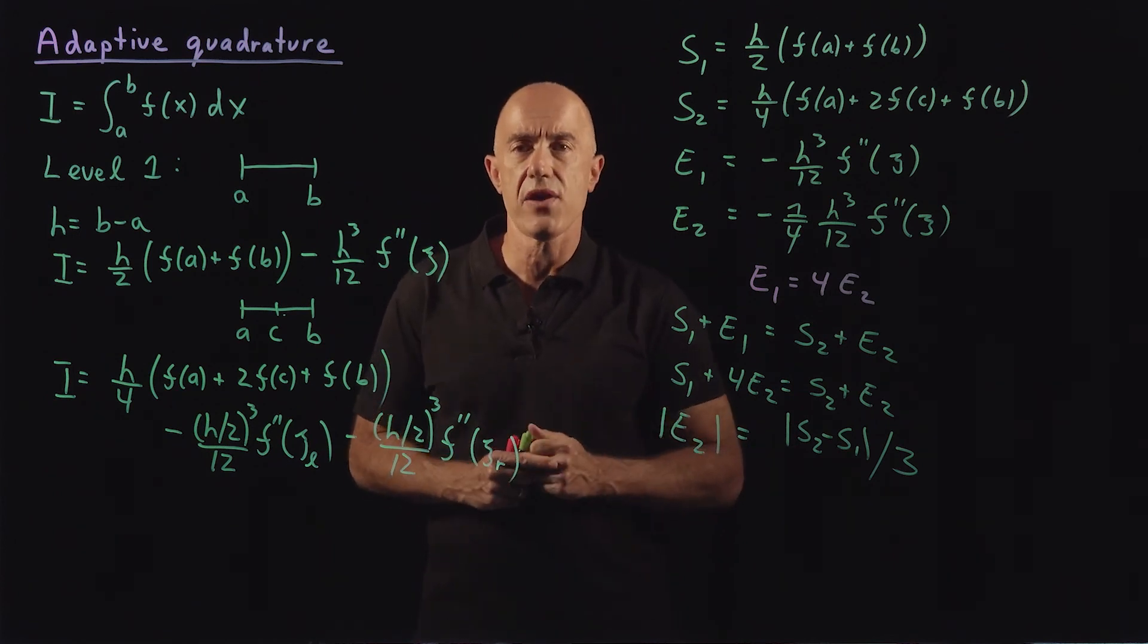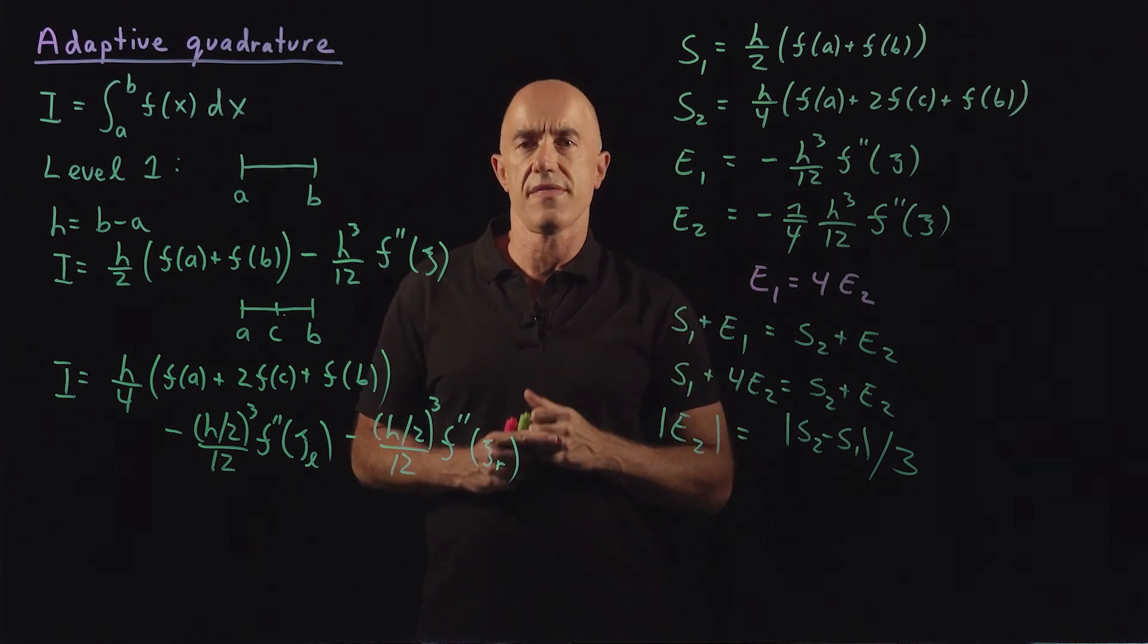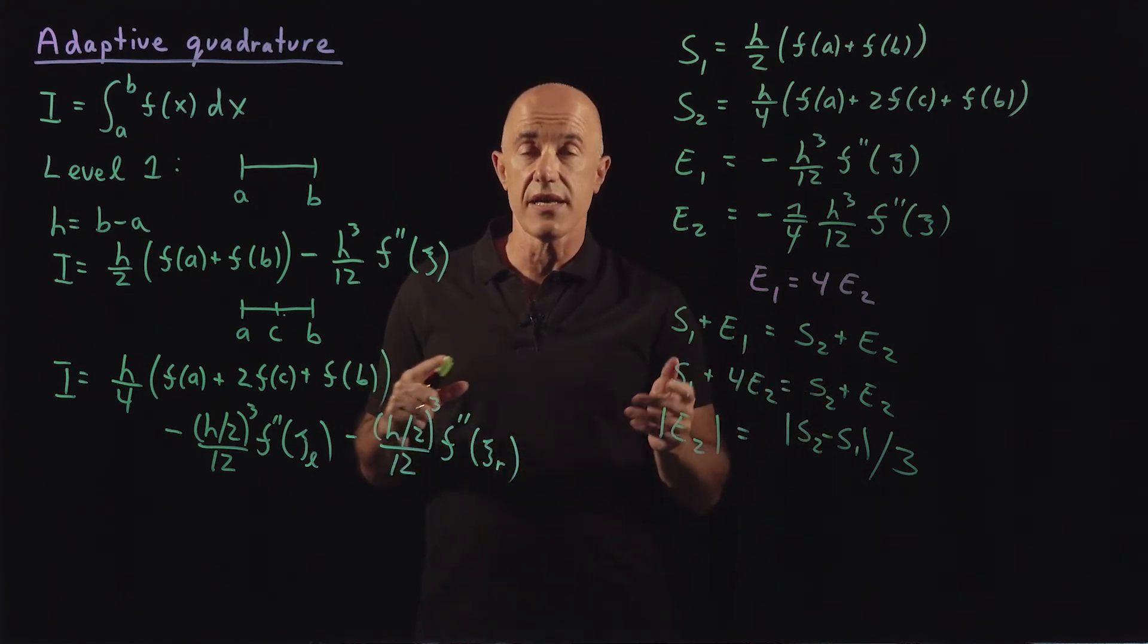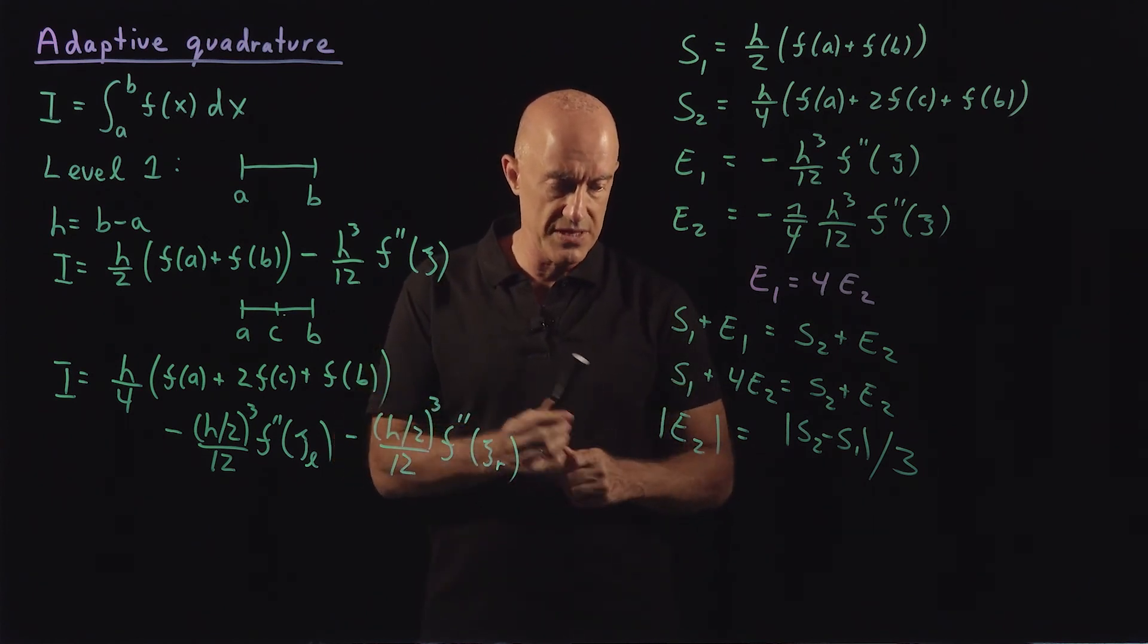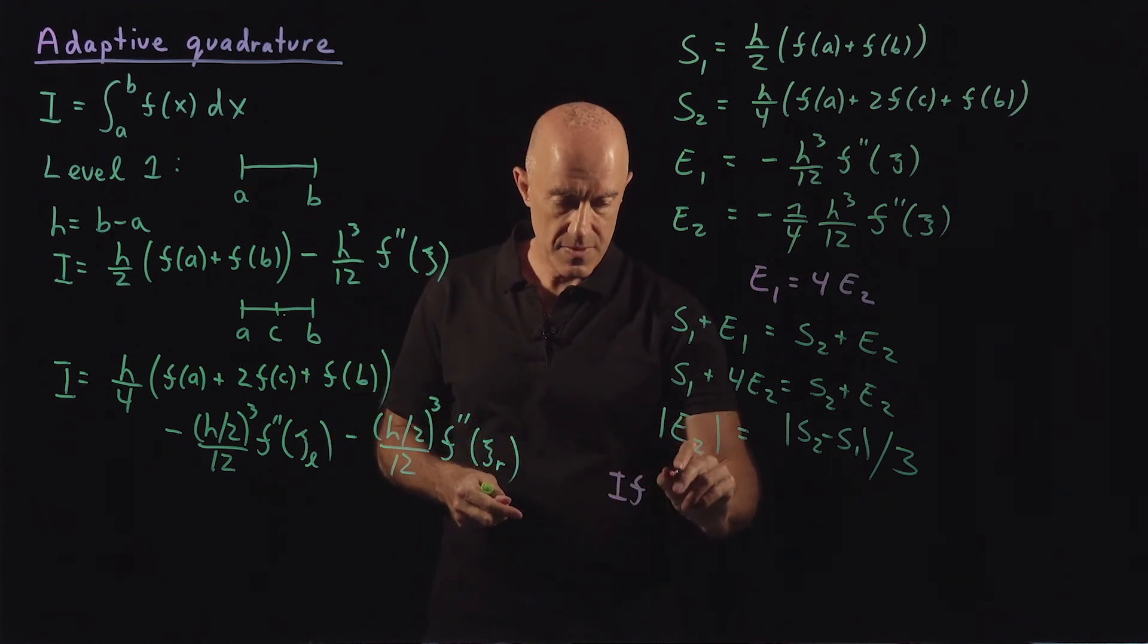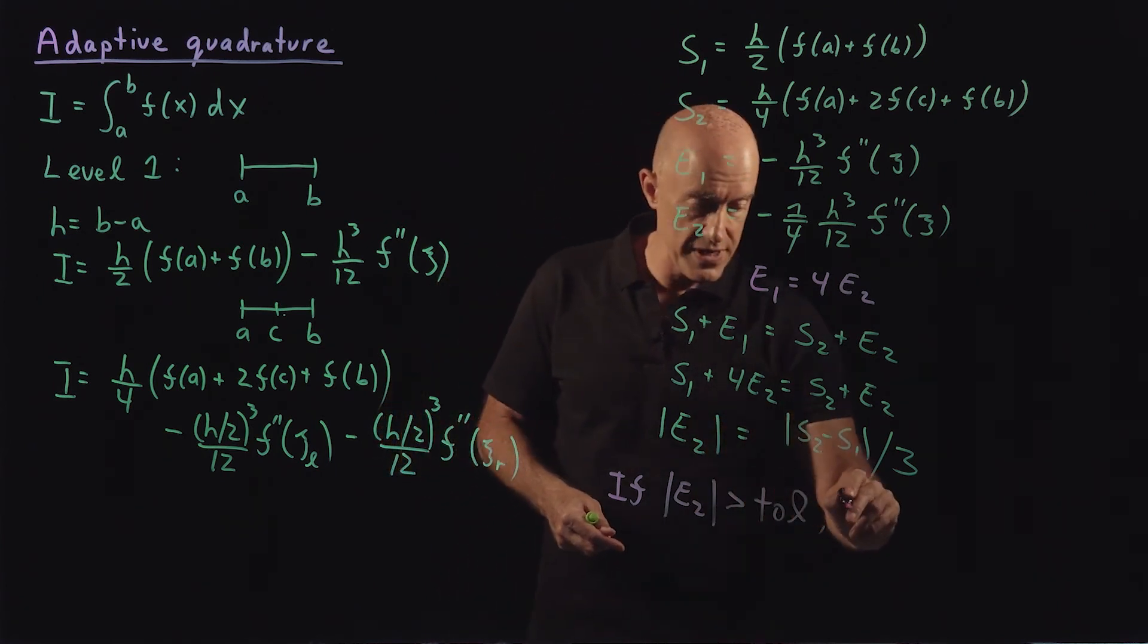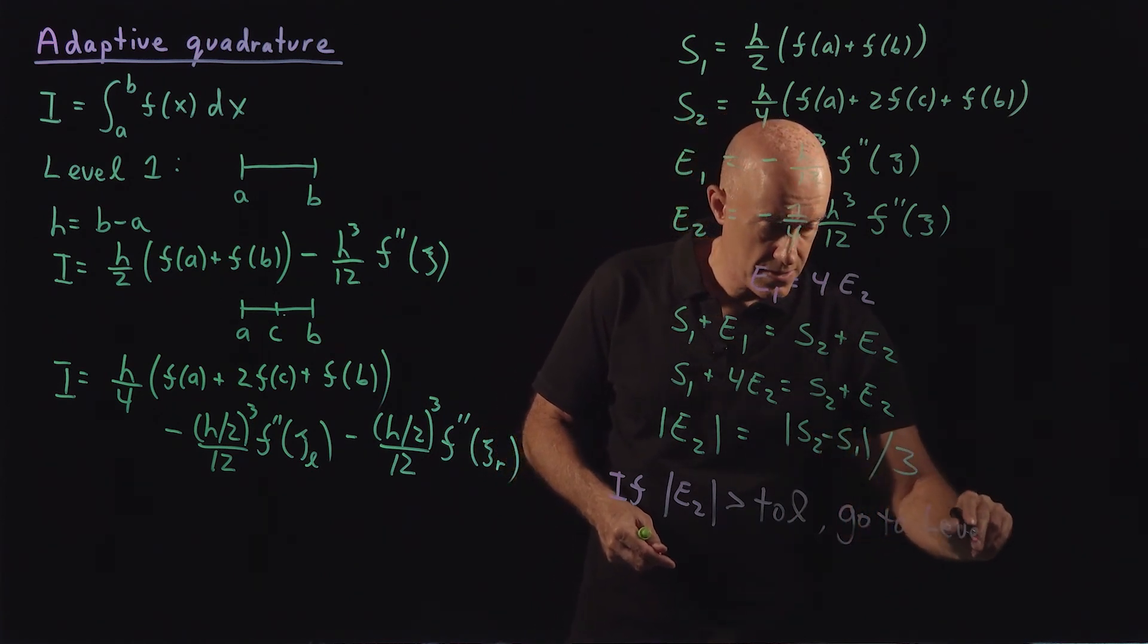We're going to be comparing then e2 against the maximum error that we find acceptable. So if e2 is greater than our tolerance, then we're not done. Then we need to go further. If e2 is greater than some specified tolerance, then we go to level two.